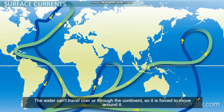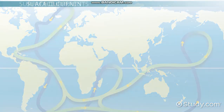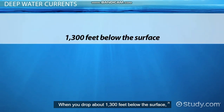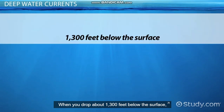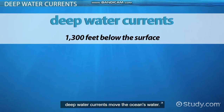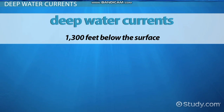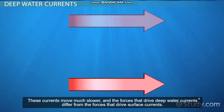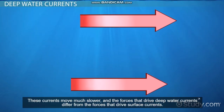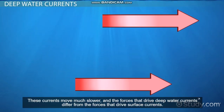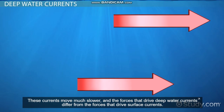The water can't travel over or through the continent, so it is forced to move around it. When you drop about 1,300 feet below the surface, deep water currents move the ocean's water. These currents move much slower, and the forces that drive deep water currents differ from the forces that drive surface currents.